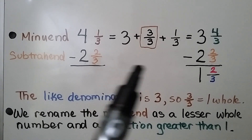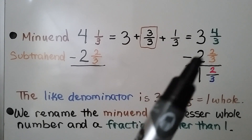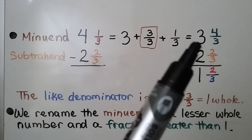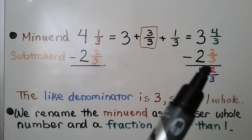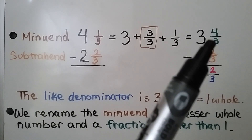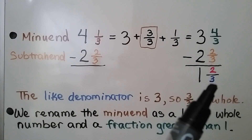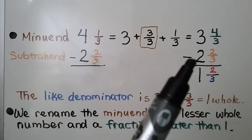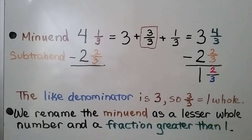Now we can take away the 2 and two-thirds. The numerators: 4 minus 2 is 2. We have like denominators, so we have two-thirds. We do 3 minus 2 is 1. We have 1 and two-thirds.